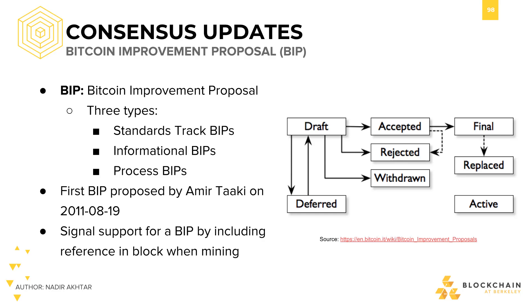There are three types of BIPs: standard, informational, and process. A standard BIP is an actual update or change to the protocol, and this is how the ecosystem changes — and all miners vote on.